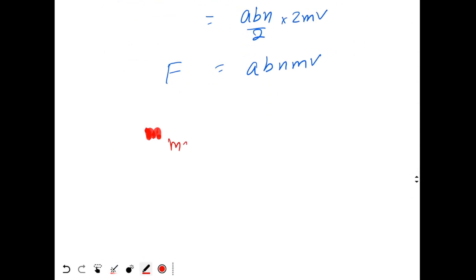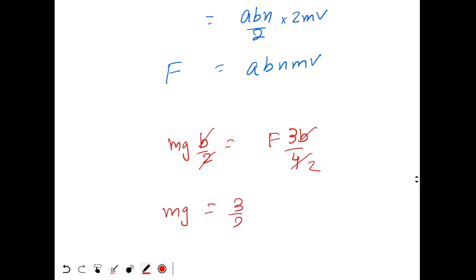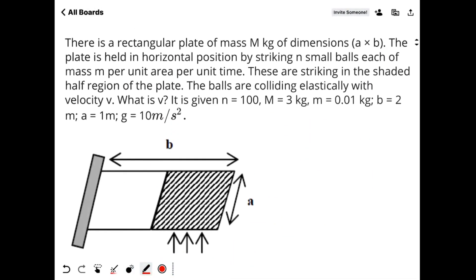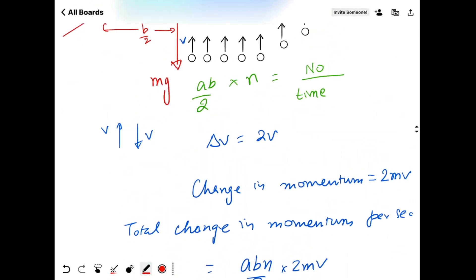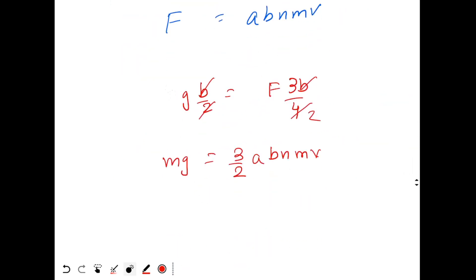From mg × (B/2) = F × (3B/4), B cancels out, giving mg = (3/2) × F. Substituting F = ABnmv, we get Mg = (3/2) × ABnmv. Note: the plate's mass is capital M, so gravitational force is capital Mg. Solving for v: v = 2Mg / (3ABnm).